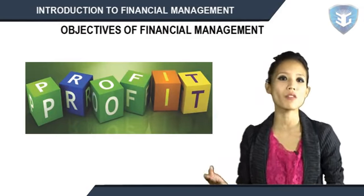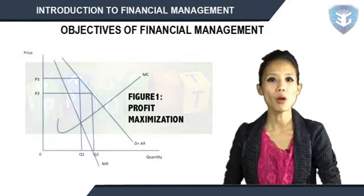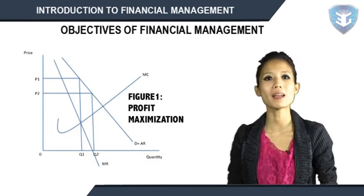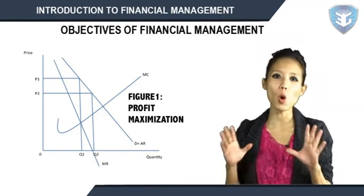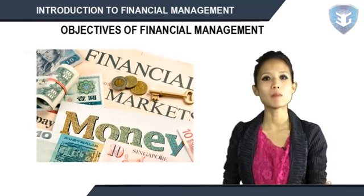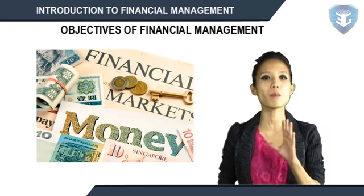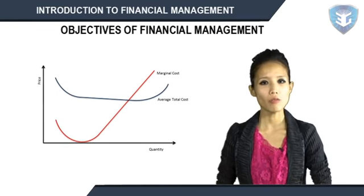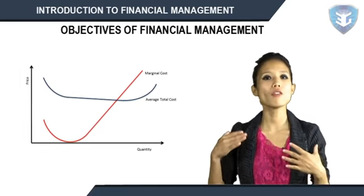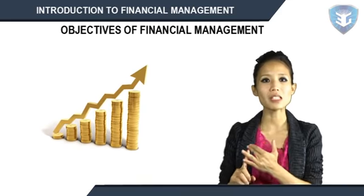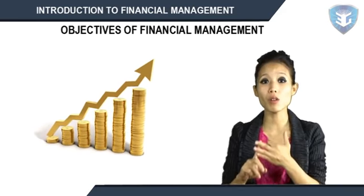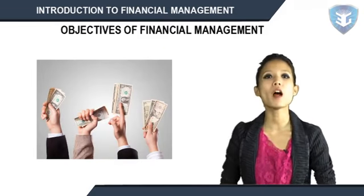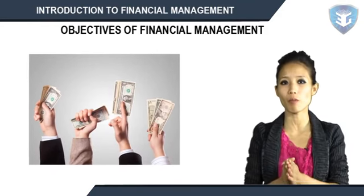Objectives of financial management may be broadly divided into two parts: profit maximization and wealth maximization. Profit maximization aims to maximize the profit of the concern. Profit maximization is also called earnings per share maximization — the ultimate aim of the business concern is earning profit, it shows the entire position of the business concern, and helps to reduce the risk of the business. Favorable arguments for profit maximization: profit is the parameter of business operation, profit reduces risk, profit is the main source of finance, and profitability meets social needs also.